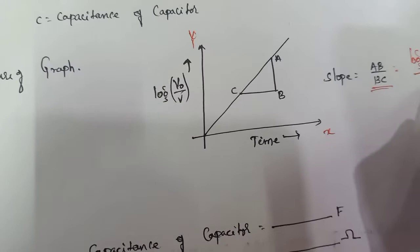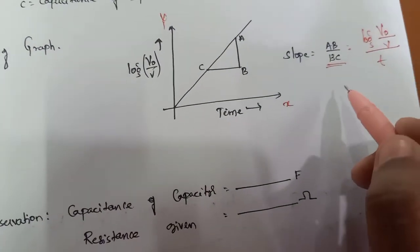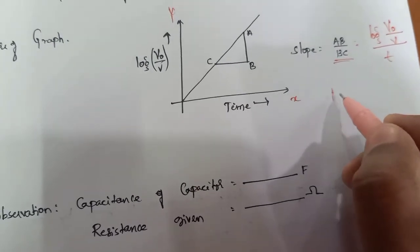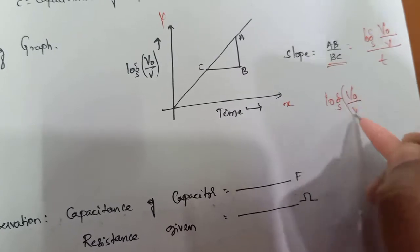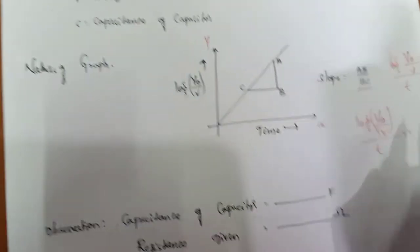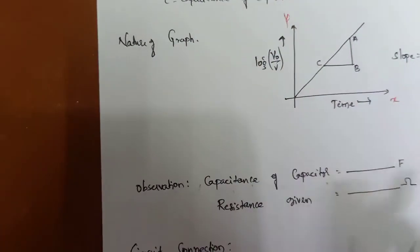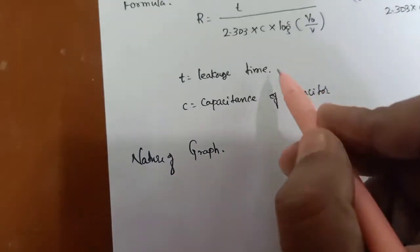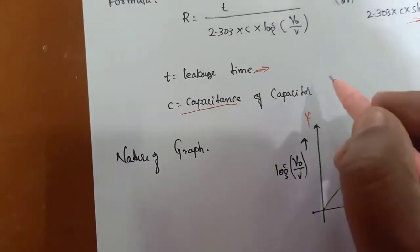When it gets reciprocal, that is log(V0/V) divided by t, this is substituted in the slope. So the leakage time t is the time, and C is the capacitance of the capacitor.